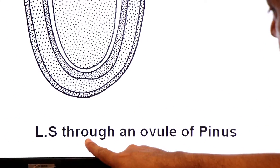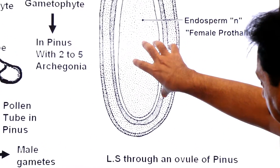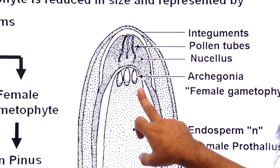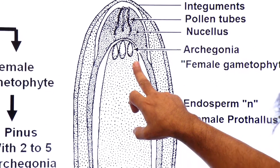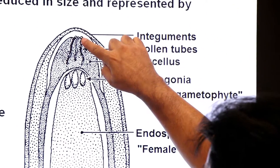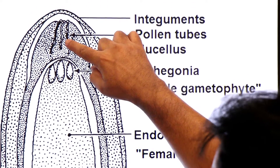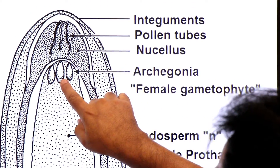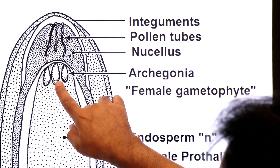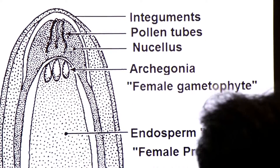This is a longitudinal section of an ovule — under it is the haploid tissue endosperm, and 2 to 5 archegonia. Jaise hi micropyle se pollen tube enter hoga, us mein male gamete/sperm hoga. The pollen tube transfers the sperm to the archegonia. Fertilization jo pollen tube ke through hoti hai usko kehte hain siphonogamy.